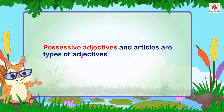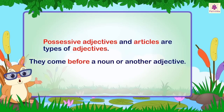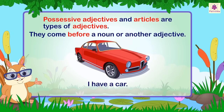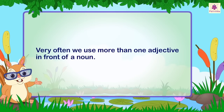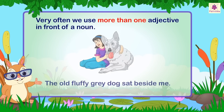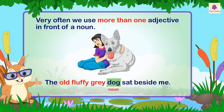Possessive adjectives and articles are types of adjectives. They come before a noun or another adjective. For example: 'I have a car' — here 'a' is used as an article. 'Where is your car?' — here 'your' is used as a possessive adjective. Very often we use more than one adjective in front of a noun. For example: the old fluffy grey dog sat beside me.